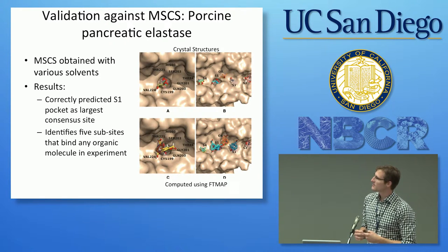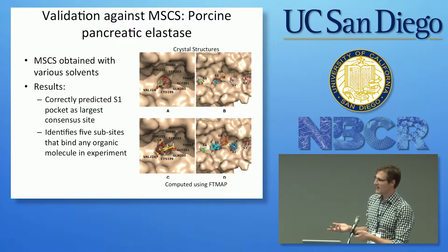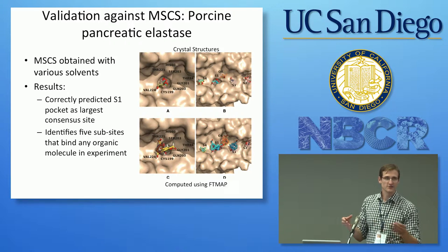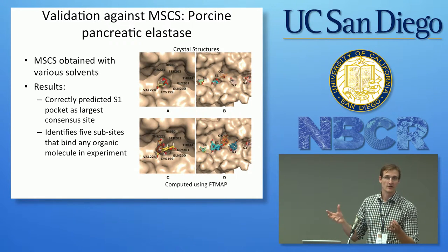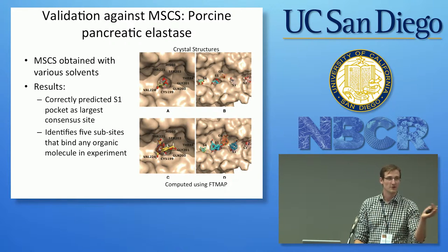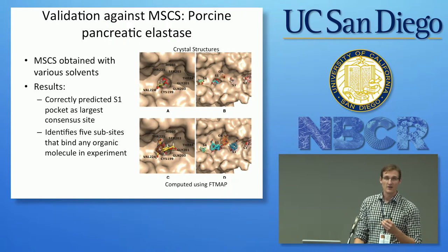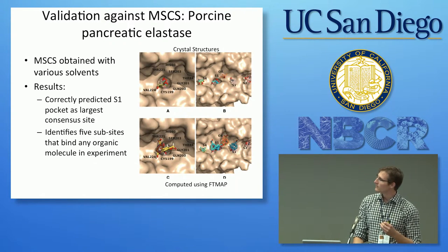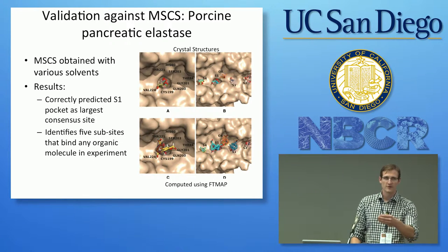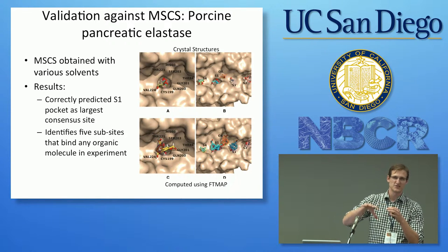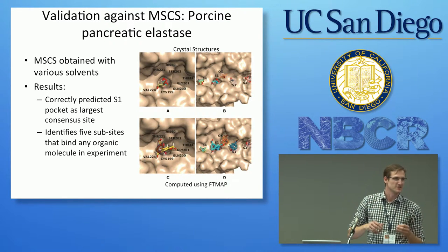That's why we developed FTProd. You might have multiple structures from several different crystal structures, MD simulation snapshots, or an NMR ensemble. If you want to compare multiple structures all at the same time, we developed FTProd to do that. It uses the output from FTMAP and combines them together in a way that allows you to see how these sites are changing across different structures.